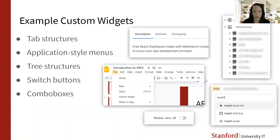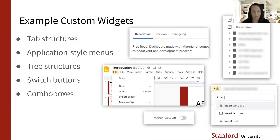Some examples of custom widgets where you may not have a native HTML control: one would be a tab structure — I've got a screenshot showing a set of three tabs where clicking each one shows different information below. We don't really have an HTML tag for tabs. Another would be application-style menus, similar to what you'd see in a desktop application like Word or PowerPoint. I have a screenshot of the Google Slides menu — it's a web application, but it gives you the same kind of functionality as a desktop application.